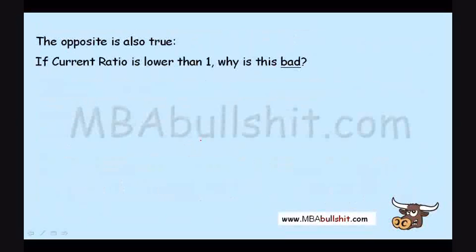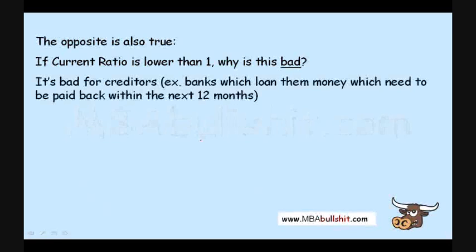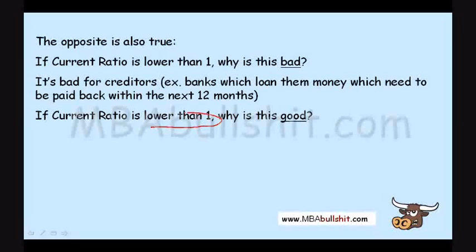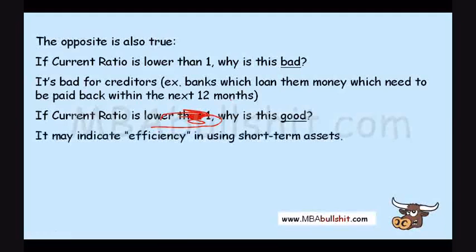The opposite is also true. If the current ratio is lower than one, it's bad for creditors because the company might not be able to pay them back within the next 12 months. But if the current ratio is lower — not necessarily lower than one, just lower — it might indicate efficiency in using short-term assets.